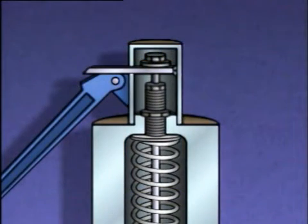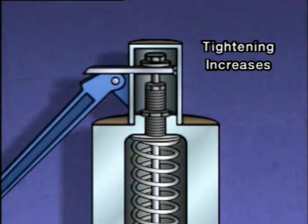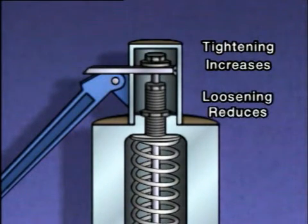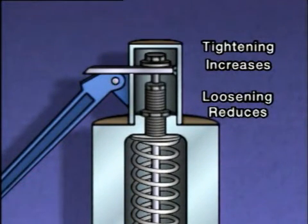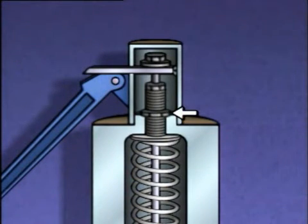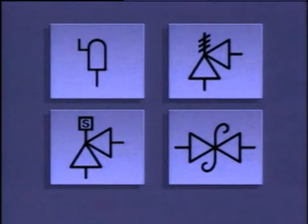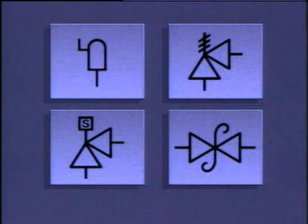The opening pressure setting can be changed using the adjusting screw. Tightening the adjusting screw increases the force exerted on the disc, thereby raising the pressure setting at which the valve opens. Loosening the adjusting screw reduces the amount of force on the disc and allows the valve to open at a lower pressure. The lock nut holds the adjusting screw in position after the force exerted by the spring has been set. On a piping system diagram, a safety valve could be represented by any of these symbols. These symbols are similar to the ones used to represent relief valves.